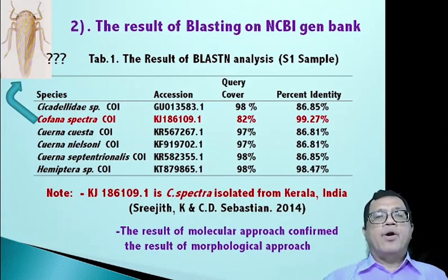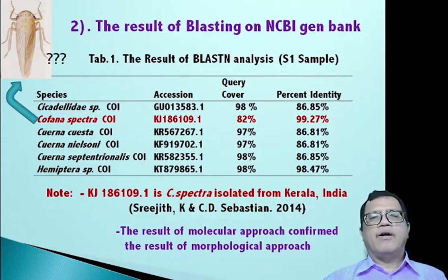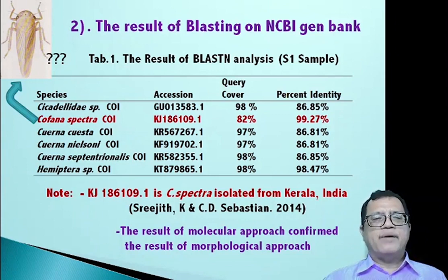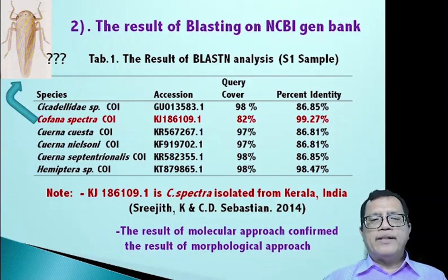Next, what kind of white leafhopper could be found on rice fields in Samosir Island? The result of blasting of the MTC01 gene on NCBI GenBank shows that the white leafhopper of Samosir Island belongs to Copana Spectra. The white leafhopper from Samosir Island has a similarity of 99.27% with the MTC01 DNA gene of Copana Spectra isolated from Kerala, India.